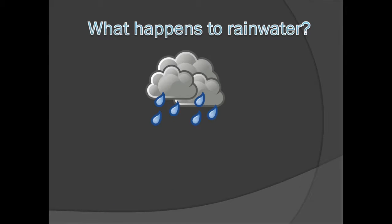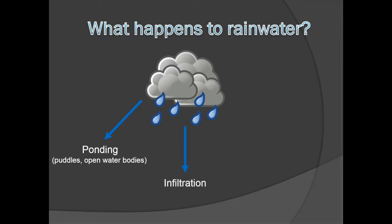Have you ever thought about what happens to rainwater after it hits the ground? We see some water collecting in puddles, but what else happens? Some of the water trickles down into the ground, which is infiltration, and some of the water becomes runoff. Where does the water that infiltrates into the ground go? It becomes groundwater.